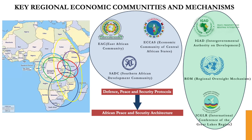Why is it so? Is it because of DRC's geographical centrality, or is it because of the mineral resources it has? Why is it that every community has a footprint in the DR Congo? On the left-hand side we have the communities, and on the right-hand side we have the mechanisms.